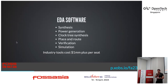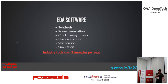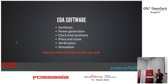On top of that, you need software to actually generate the tools — that's what goes from source code to the GDS2 file. It consists of a bunch of different things: synthesis, power generation, clock tree synthesis, place and route, verification, simulation, and a whole bunch of other things. The thing is, this costs a million dollars per seat, per engineer. So this is completely cost-prohibitive to any sort of open source product, and if we want to be able to make our own chips, we're going to have to replicate all of this.